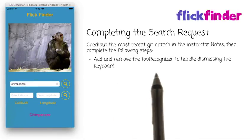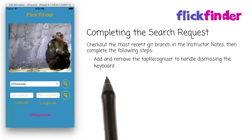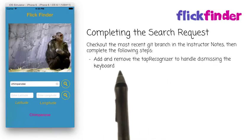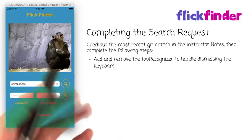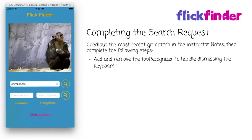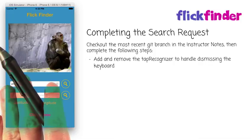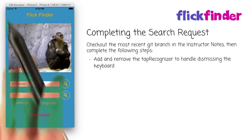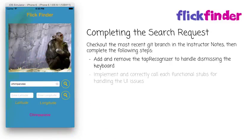First, you'll want to add and remove the tap recognizer to handle dismissing the keyboard. The reason we have add and remove here is because we'll want to add the tap recognizer when the view appears, and then when it disappears, we'll want to remove the tap recognizer. This is what helps us when the keyboard comes up and we have no way of dismissing it — we'll tap and it'll slide back down.